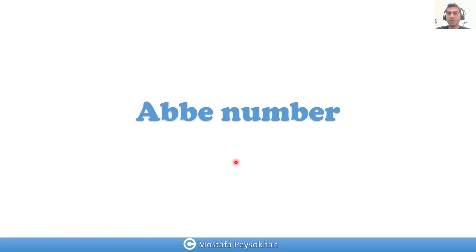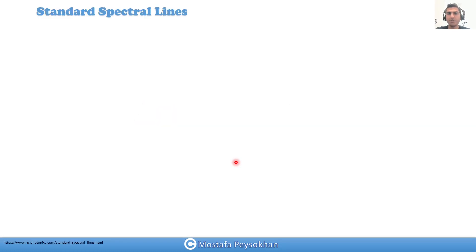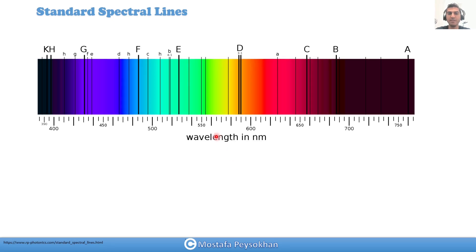To understand a number of optical materials, first we need to understand the standard spectrum lines. In this graph we have different colors, and each line on this spectrum is a spectral line of a specific material. For example, you can see red colors for hydrogen, blue colors, and green for sodium lamp. For the Abbe number, the three important spectrum lines are capital C, capital F, and lowercase d.